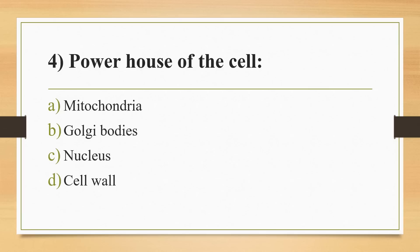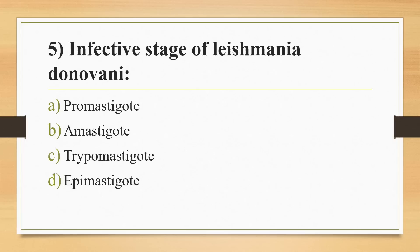Fourth question: powerhouse of the cell. Options: mitochondria, Golgi bodies, nucleus, or cell wall. Answer is Option A, mitochondria. Fifth question: infective stage of Leishmania donovani. Options: promastigote form, amastigote, trypomastigote, or epimastigote. Answer is Option B, amastigote form.